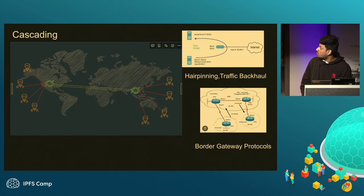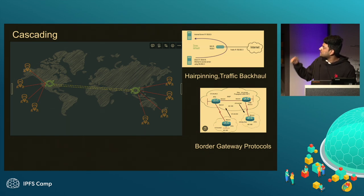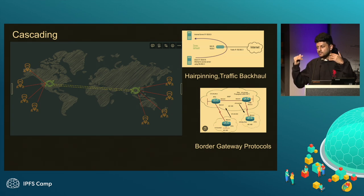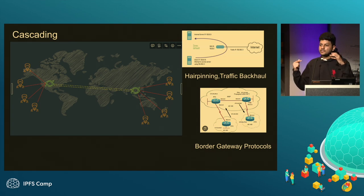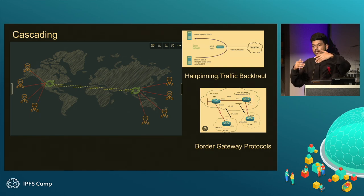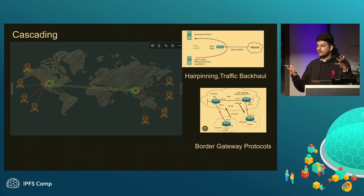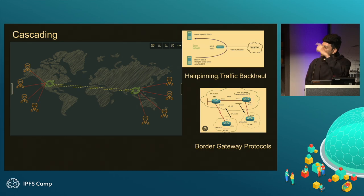Hairpinning: if two people are on the local network, WebRTC negotiates with public IPs, so there's a scenario where your packet can actually leave your local network, go out to the internet, and come back. You don't want that when people are on the same local area network. Cascading really prevents all of that.